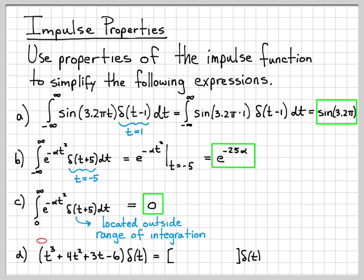So what I need to compute is the value of my signal at time 0. So I can do that by replacing all the t's with 0's. So I'm going to have 0³ + 4·0² + 3·0 - 6. So most of these terms go away,